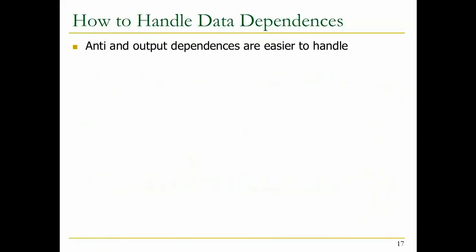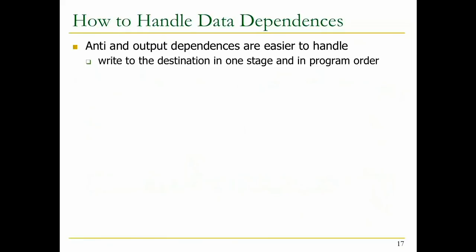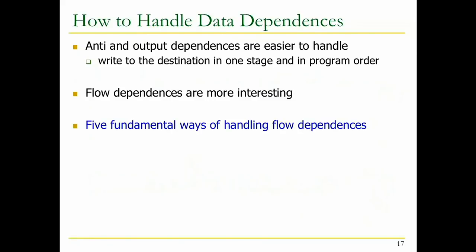How to handle data dependence in a pipeline machine: anti and output dependencies are not true dependencies and are easier to handle - if you write to the destination register in program order at the end of the pipeline and maintain that invariant, you don't have a problem. Flow dependencies are more interesting because they really cause stalls. There are five fundamental ways of handling these. One very primitive way is to detect the dependence and wait until the value is available in the register file. There are two parts: detecting the dependence, and waiting.